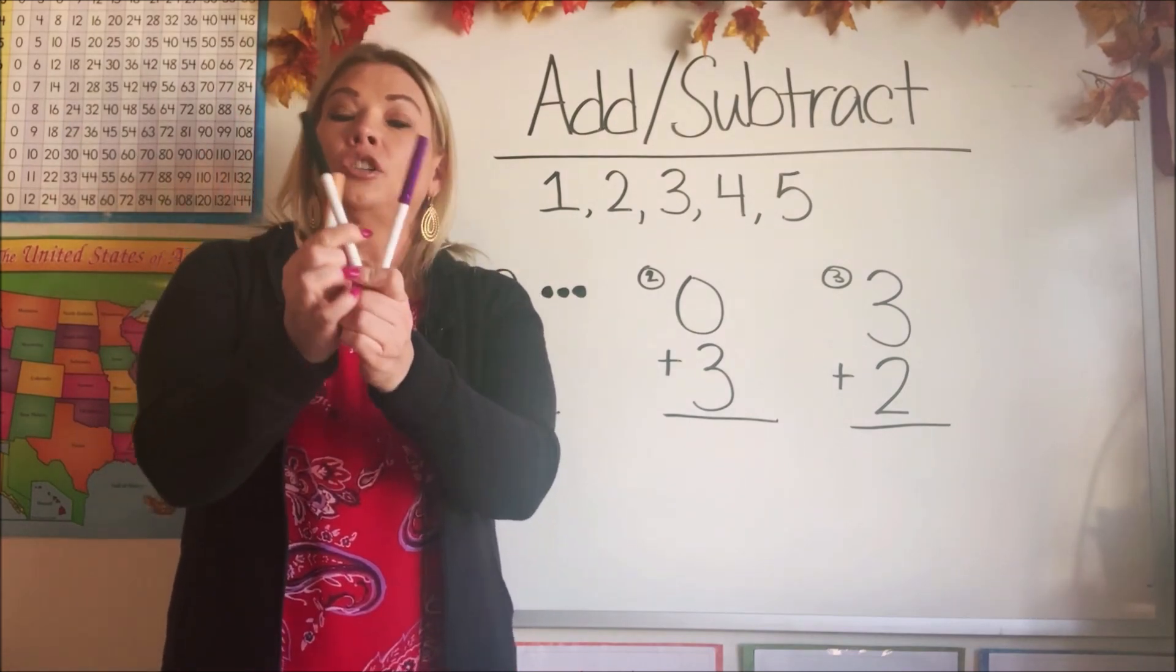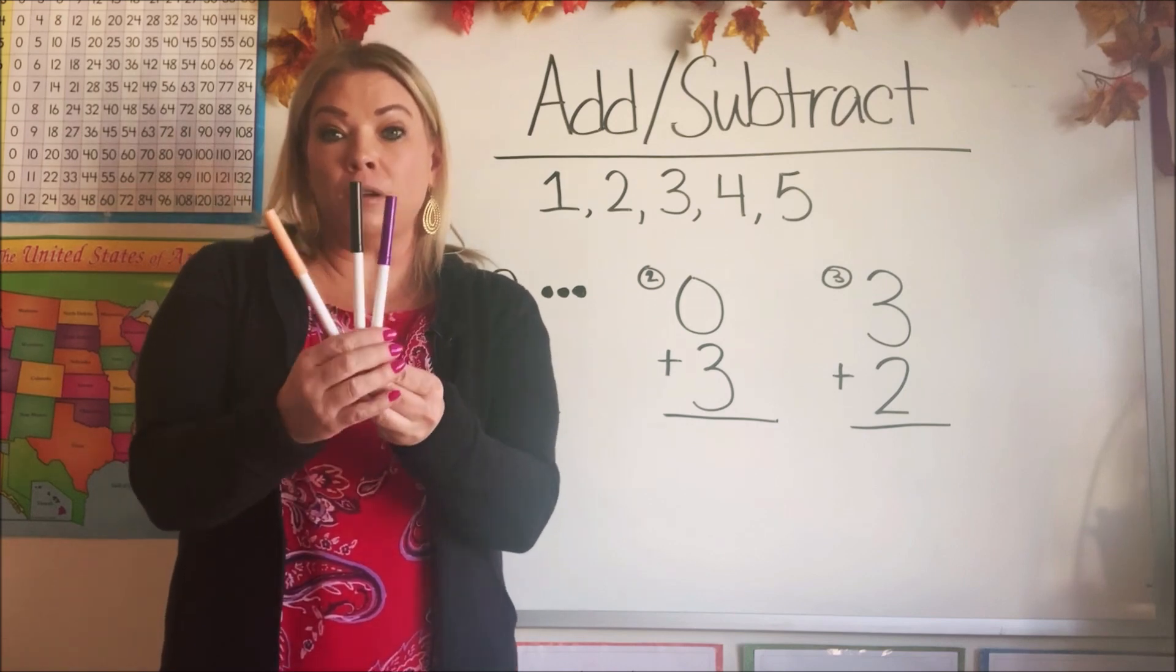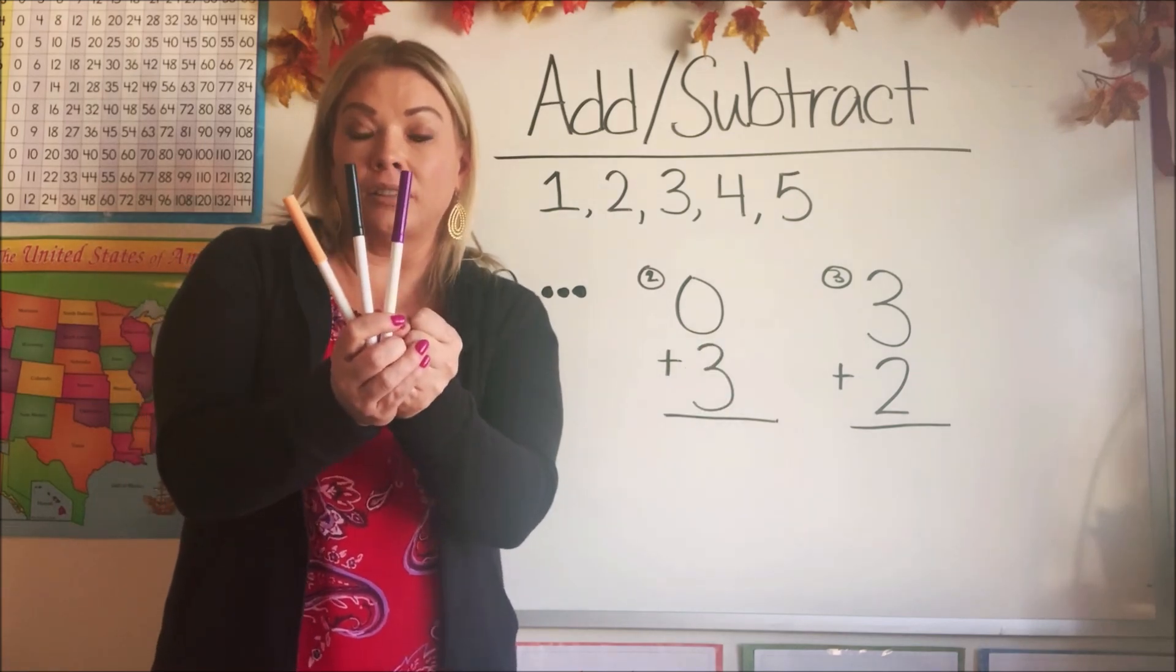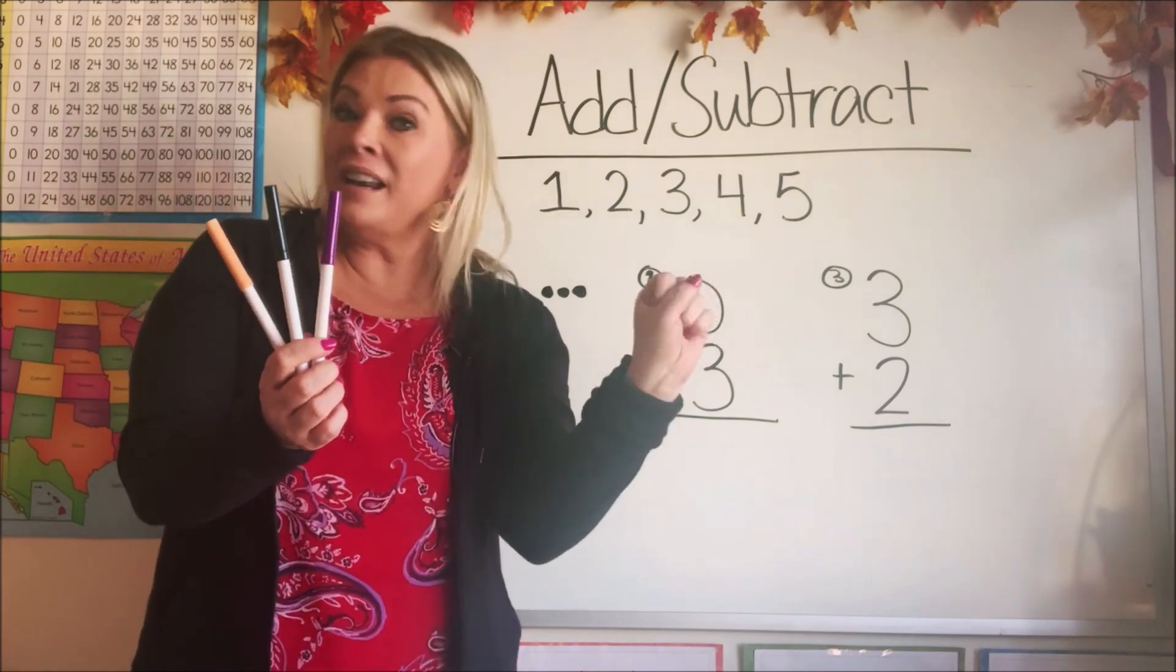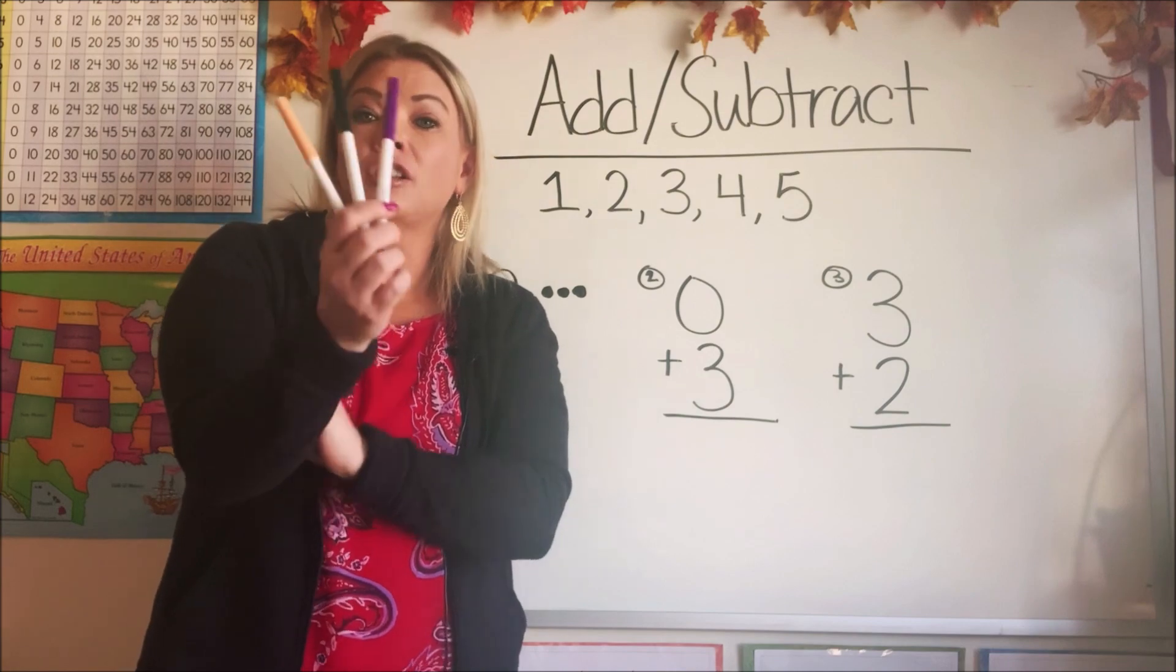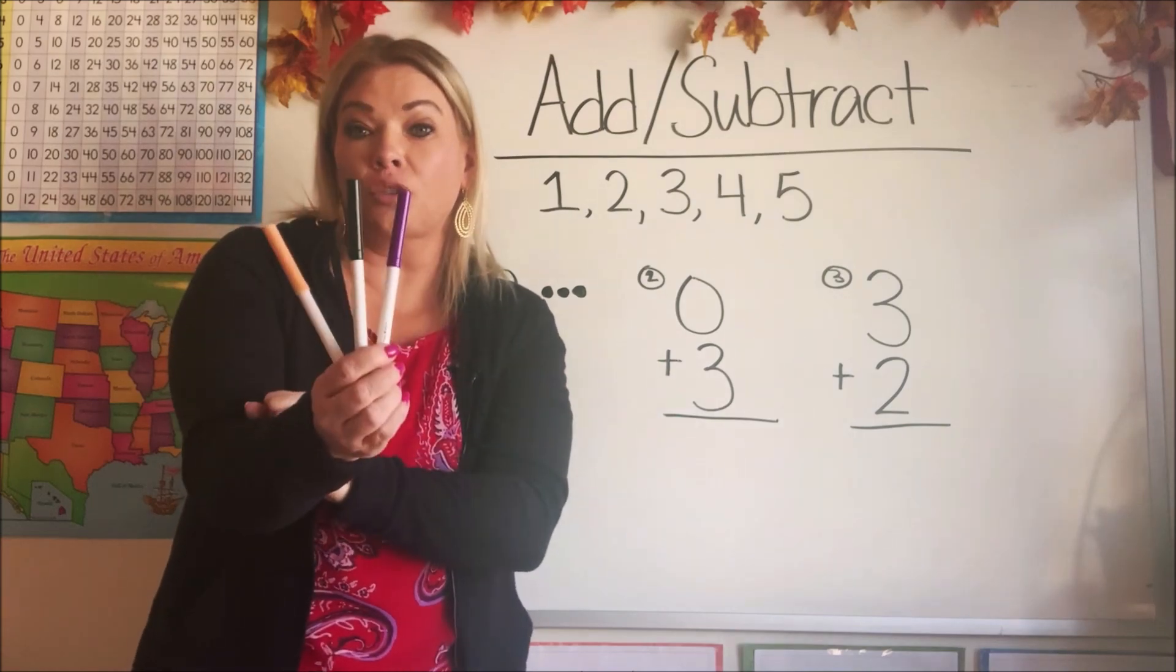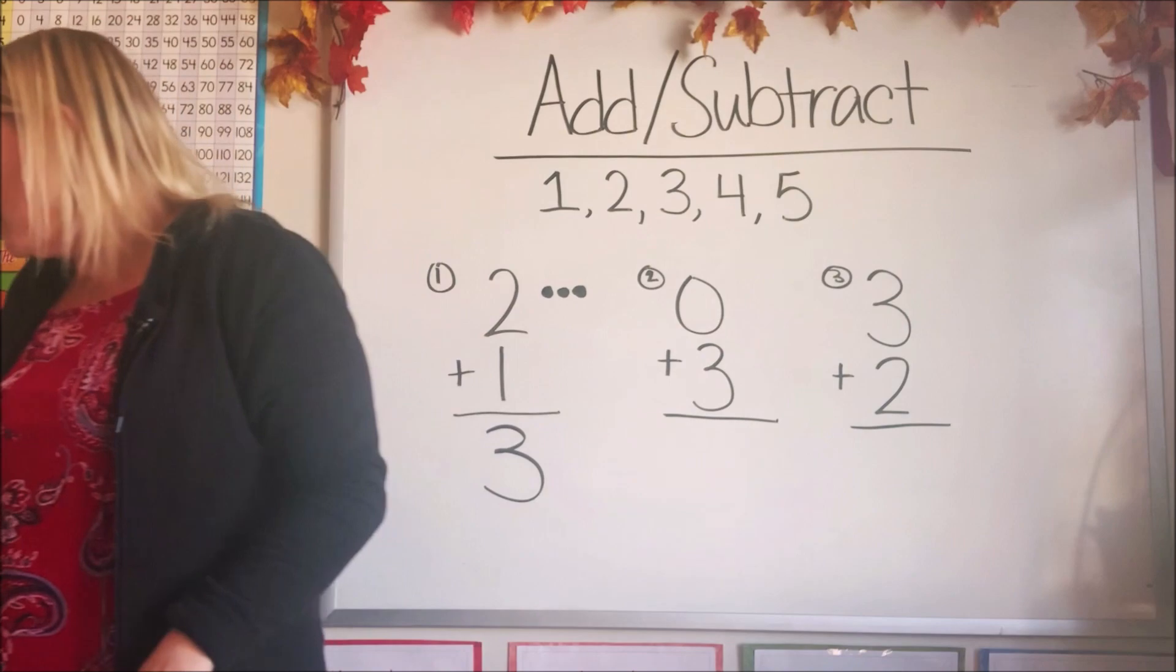So I have three markers and I'm going to add zero to it. If I put them together, what do I have? I still only have three. Because if you add nothing to it, then this number doesn't change. So zero plus three equals three. Let's write our answer down.